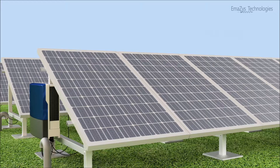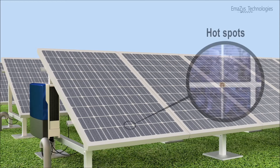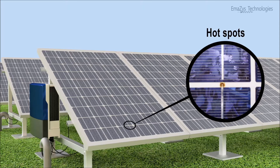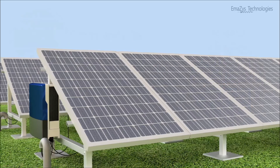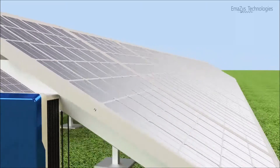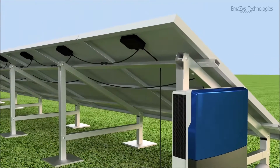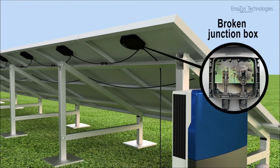Faults on the direct current side may include hotspots, which occur when electrical power is dissipated locally in PV modules. Deteriorated cells, which occur frequently and cause energy loss. Junction box failure, which can lead to substantial losses.